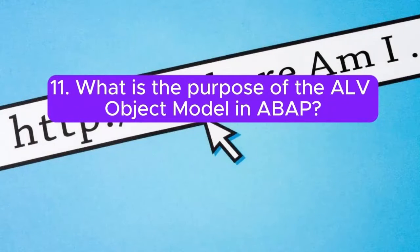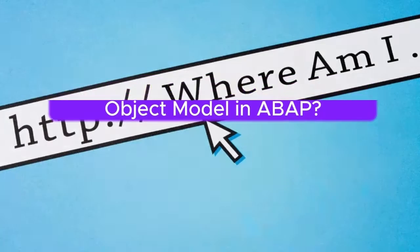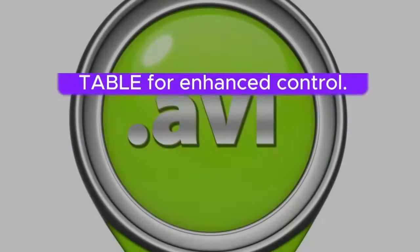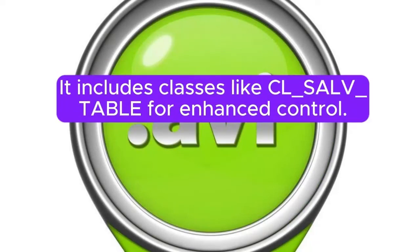Question 11: What is the purpose of the ALV object model in ABAP? Answer: The ALV object model provides a structured approach for developers to interact with ALV grids programmatically. It includes classes like CL_SALV_TABLE for enhanced control.